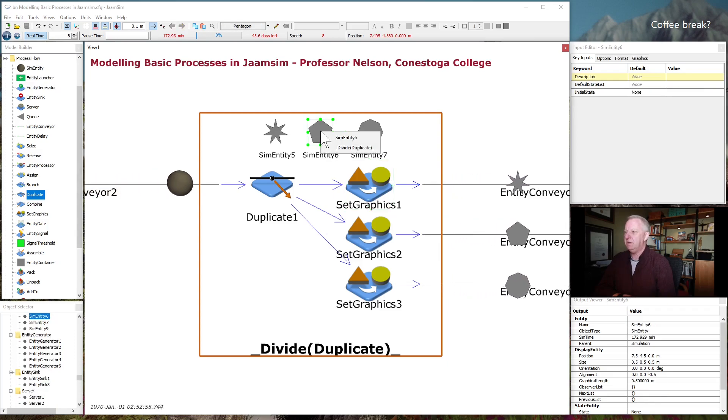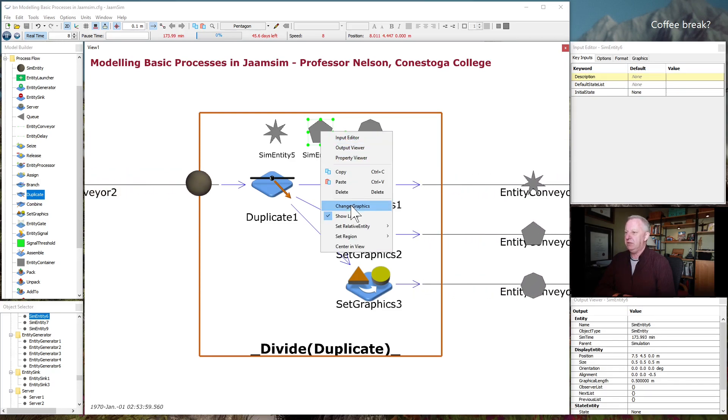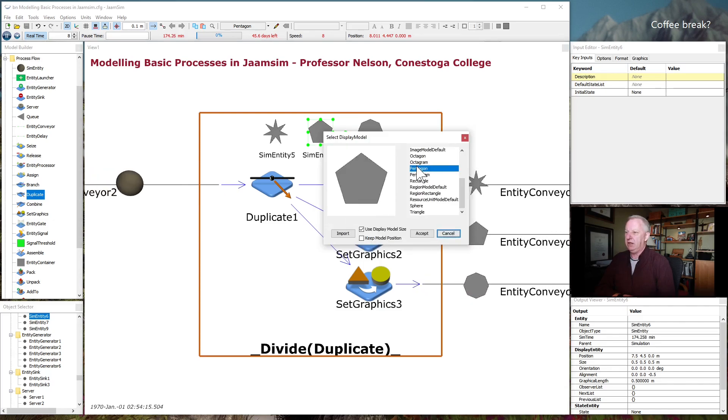So I'm taking advantage of that by defining three different shapes using three more sim entities that I've just dragged in here. And then I've changed their shape. If you right-click on this, you come up with this menu. This is sim entity 6. I've come down here and said change graphics. And I've just changed it from the default sphere to a pentagon. But you can change it to anything you want.